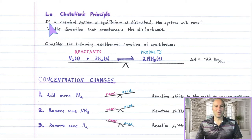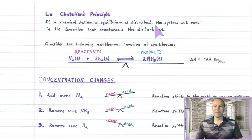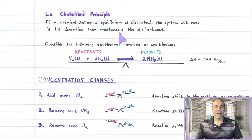It reads: if a chemical system at equilibrium is disturbed, the system will react in the direction that counteracts the disturbance.